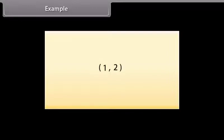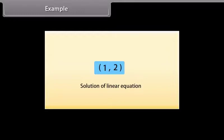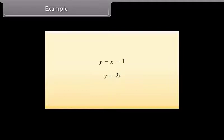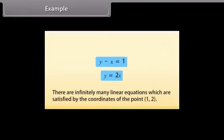Let us go through an example. Take the point (1, 2). We will find the equation of a line on which it lies. Since (1, 2) is a solution of a linear equation, we will look for any line passing through the point (1, 2). One example of such a linear equation is X plus Y is equal to 3, because when we put X as 1 and Y as 2, we get the answer 3. Other examples are Y minus X is equal to 1, and Y is equal to 2X. In fact, there are infinitely many linear equations which are satisfied by the coordinates of the point (1, 2).